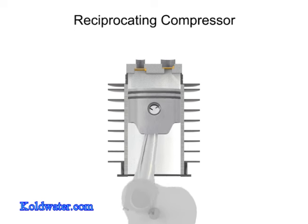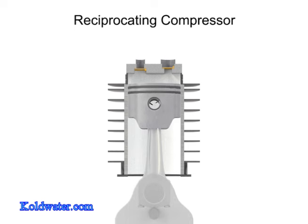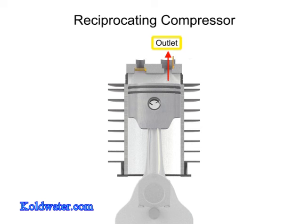There are two valves at the head of the cylinder: an inlet and an outlet. The inlet, sometimes called the suction valve, allows atmospheric air to enter the cylinder. The outlet, sometimes called the discharge valve, ejects the newly compressed air from the cylinder.